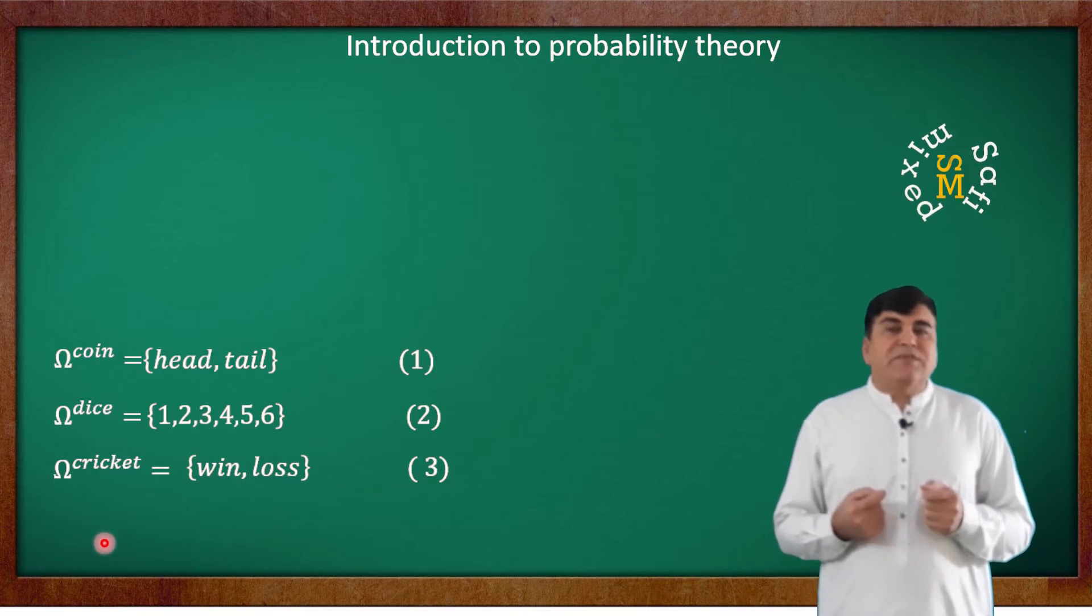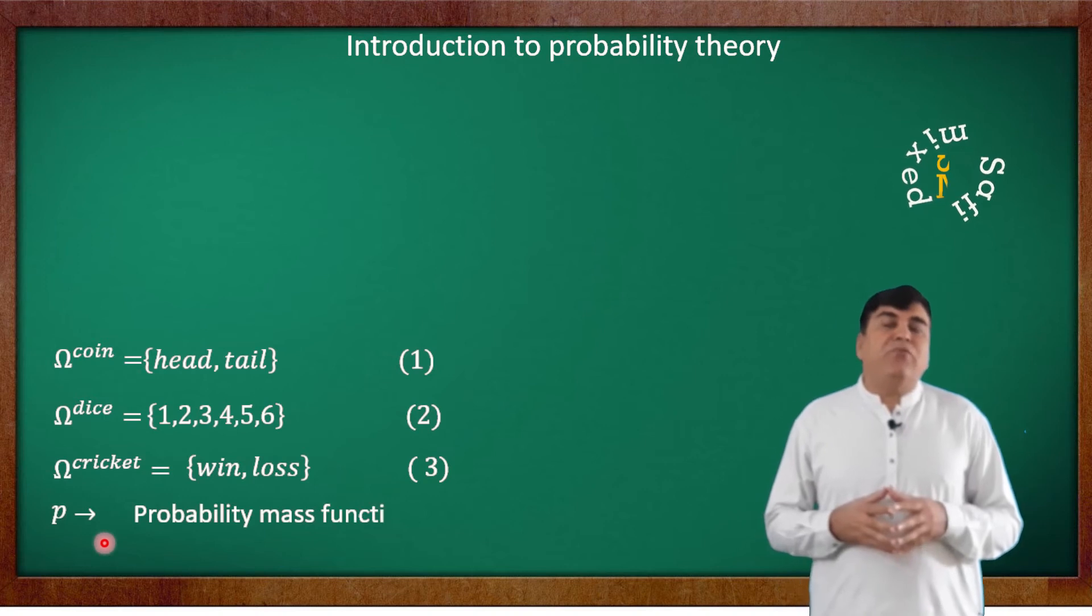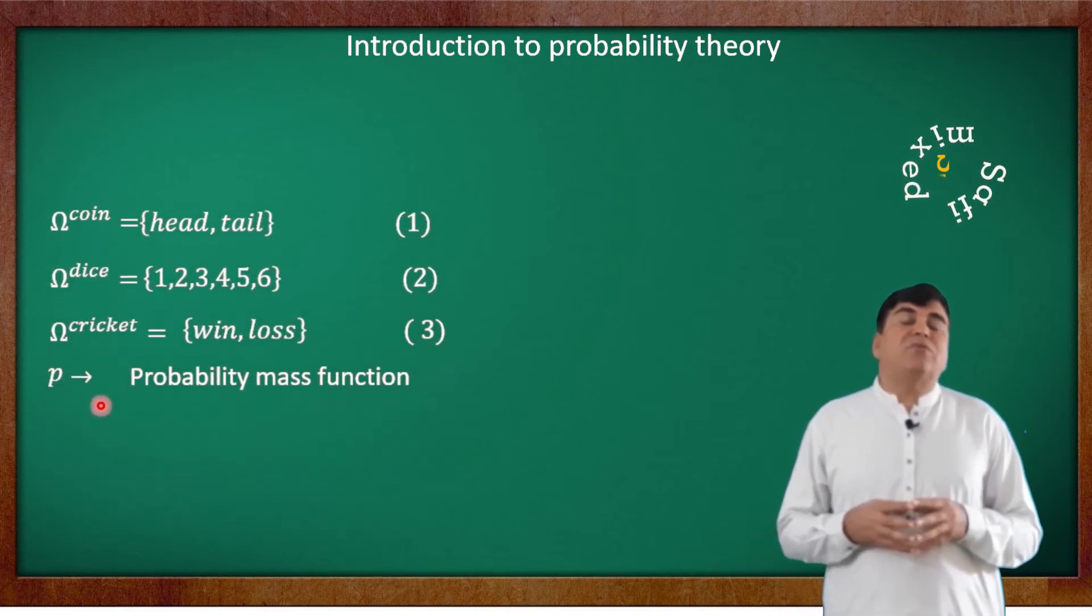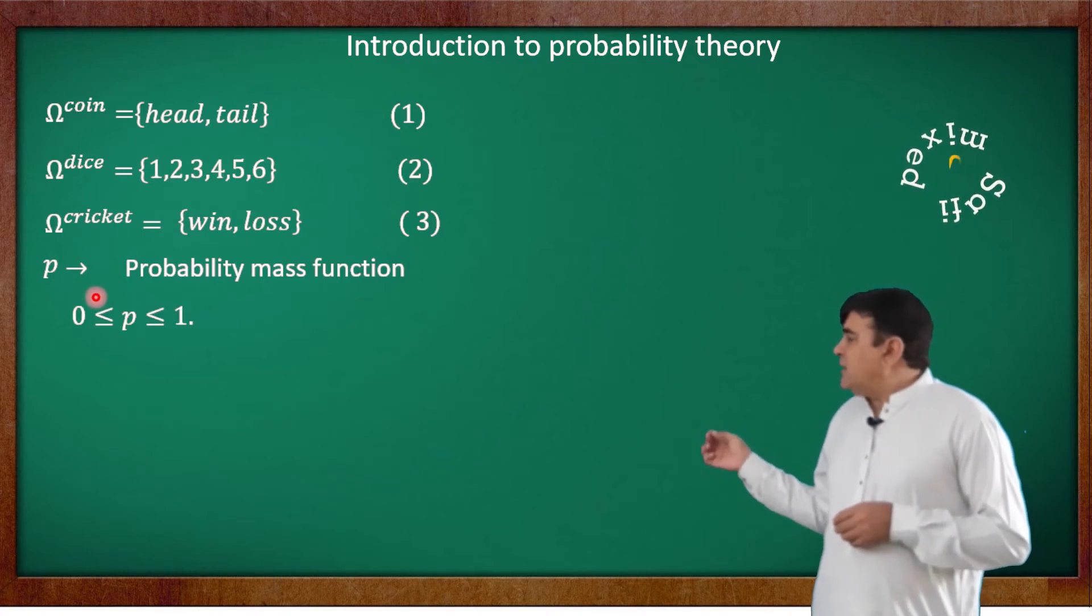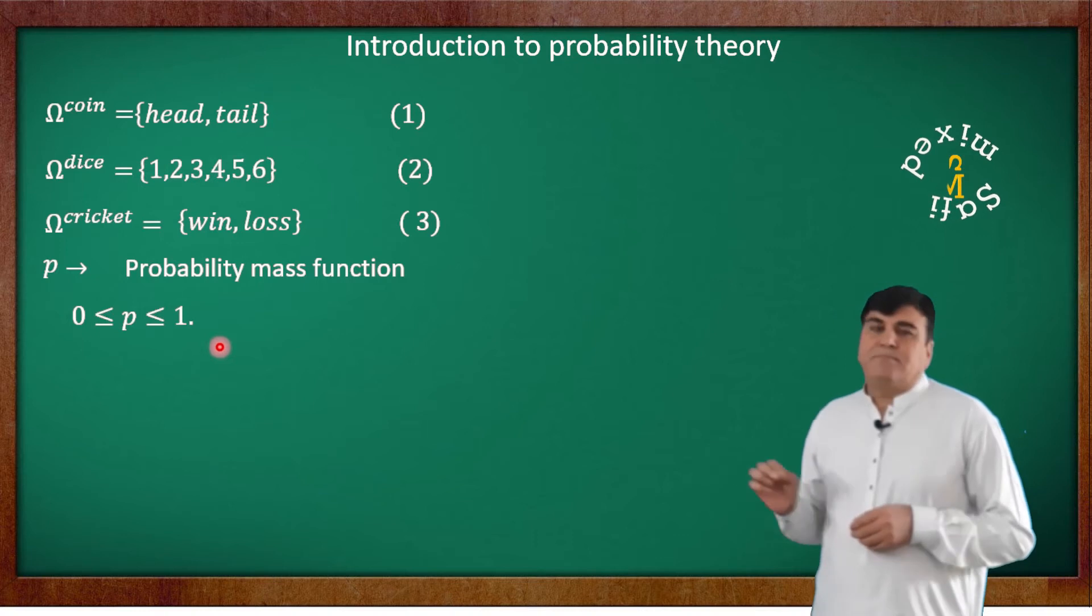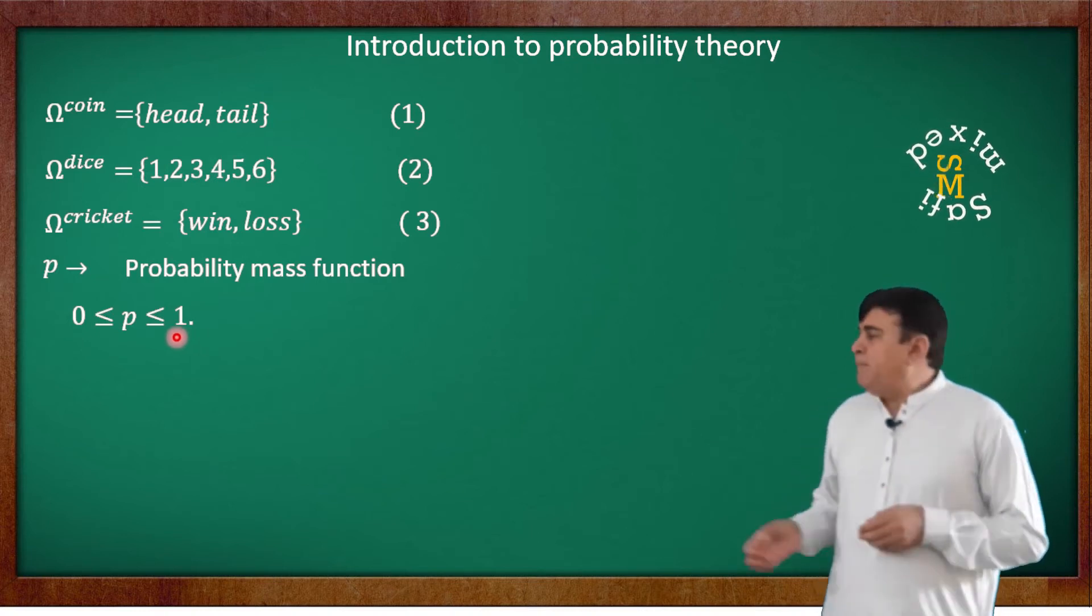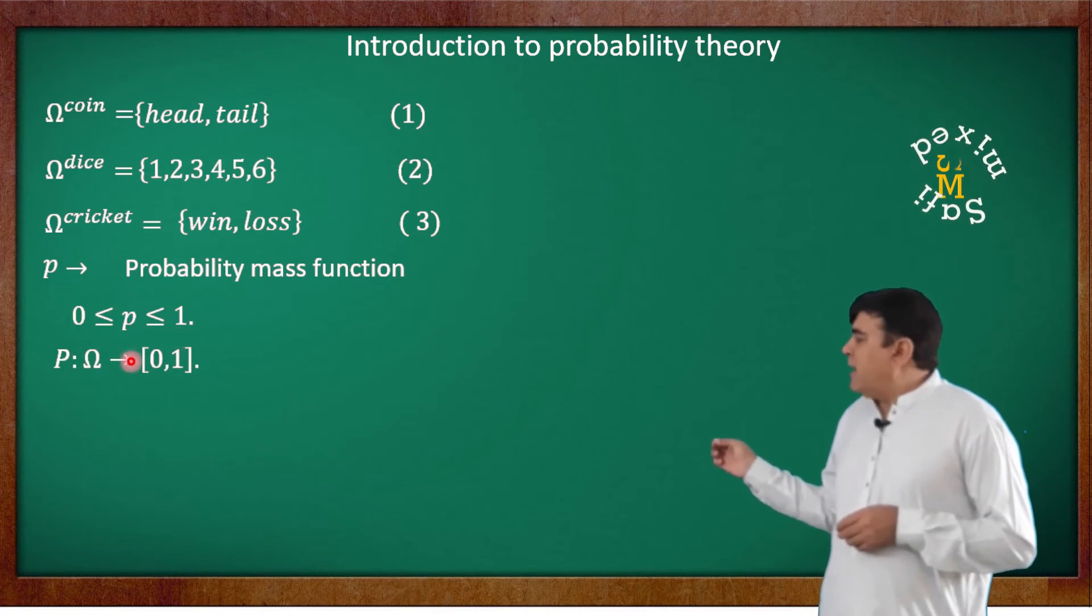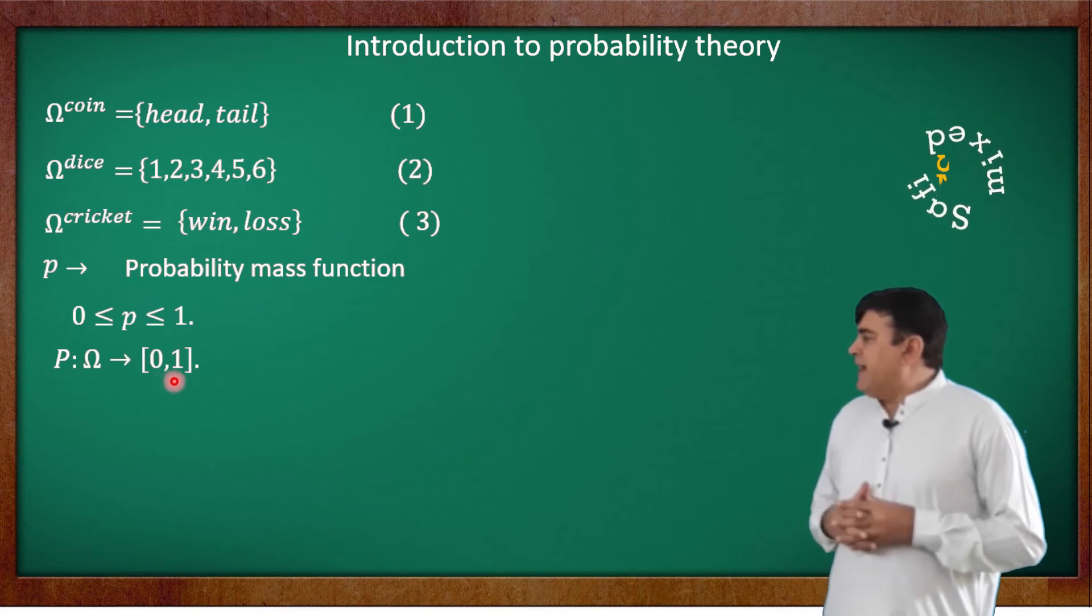This is usually denoted by the letter P and can have any value bounded between 0 and 1. That is, 0 ≤ P ≤ 1, and is usually written in the form P: Ω → [0,1].